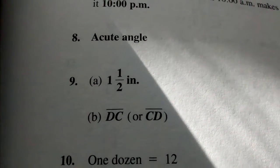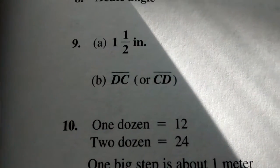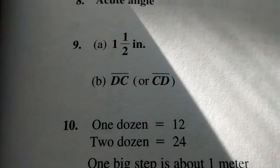Number 9, A, 1 and 1 half inches. Number B, line segment DC or line segment CD.